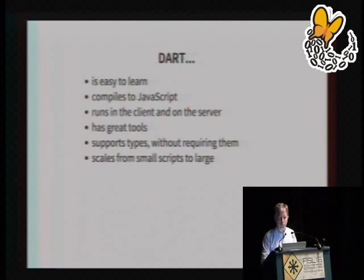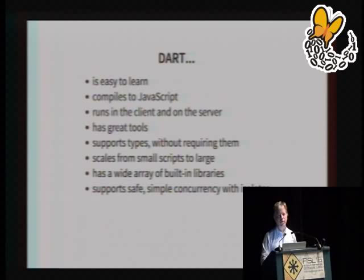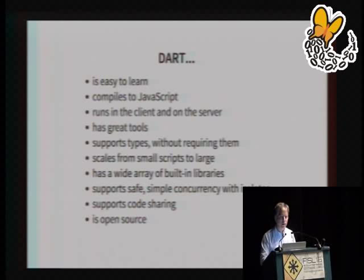It scales from very small scripts to very large applications. Internally, Google has replaced a number of their applications with Dart already and found it works well for large teams. It has a wide array of built-in libraries, supports safe and simple concurrency with isolated threads using mailboxes — so there's no deadlock, no locking. It supports code sharing; there's already the equivalent of CPAN for Perl, and there are already 3,700 packages. It's completely open source. The Dart compiler is written in Dart.